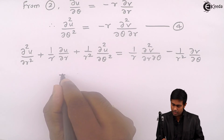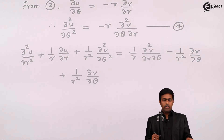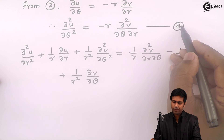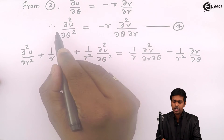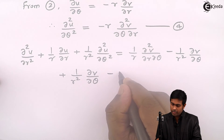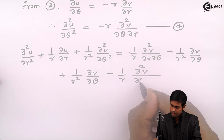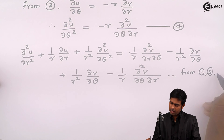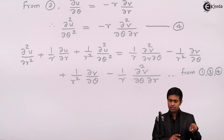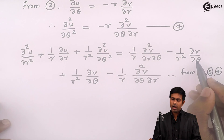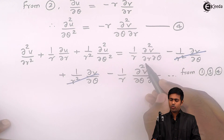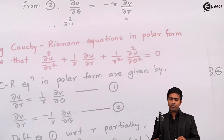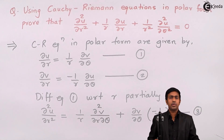For the third term, multiplying equation 4 by (1/r²) gives -(1/r)(∂²v/∂θ∂r). Now let us check the terms: (1/r²)(∂v/∂θ) appears once positive and once negative — they cancel. (1/r)(∂²v/∂r∂θ) appears once positive and once negative — they cancel. This means we get 0, and therefore we have proved the Laplace equation from the Cauchy-Riemann equations in polar form. Thank you.